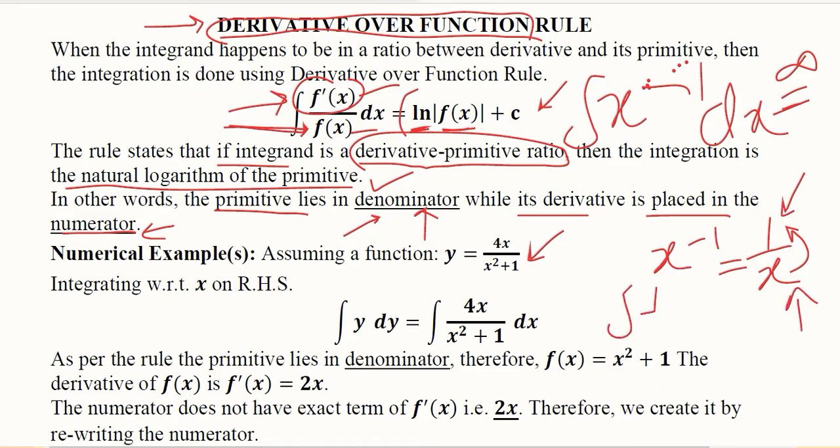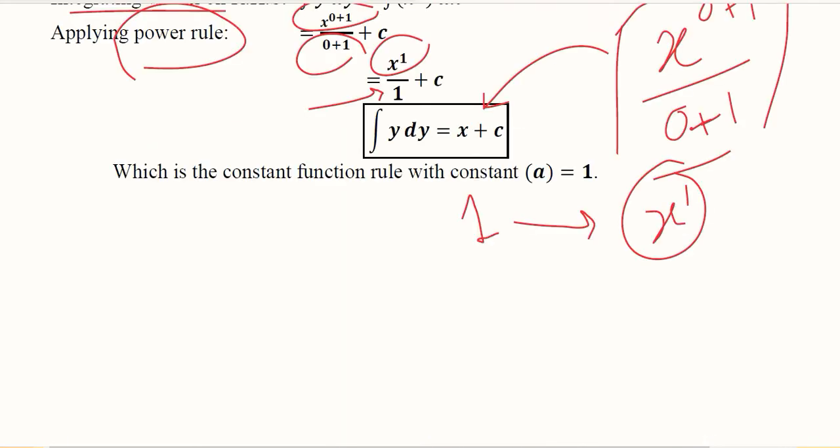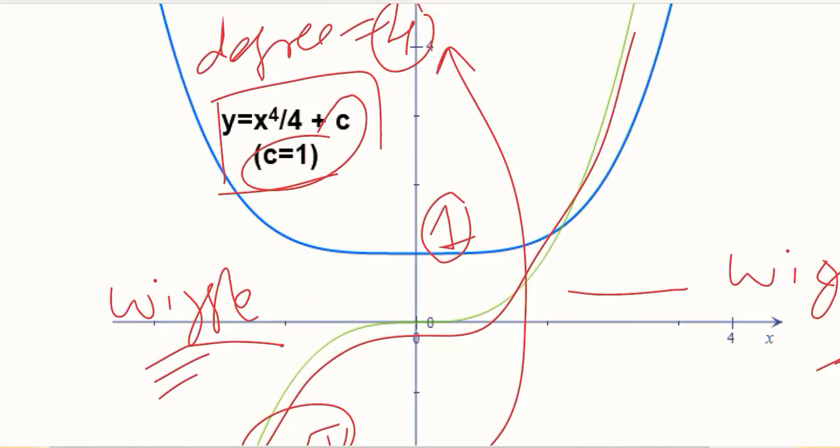If this is the situation, the answer will be the natural log of the denominator, that is the function, which is natural log of x. Plus c will also be there because this is the natural log that we are getting as a result of integration, for which we have to write the constant of integration. This is the solution of that certain problem that we had in our power rule. This is just a reminder of it.